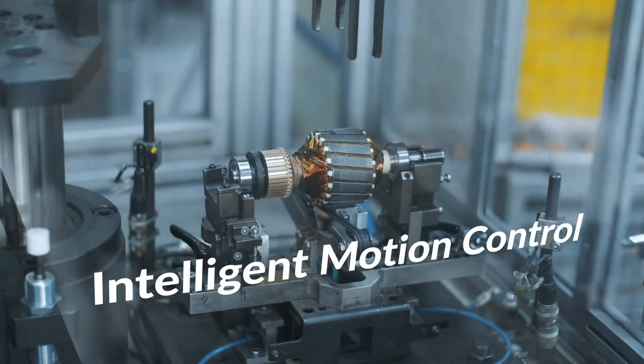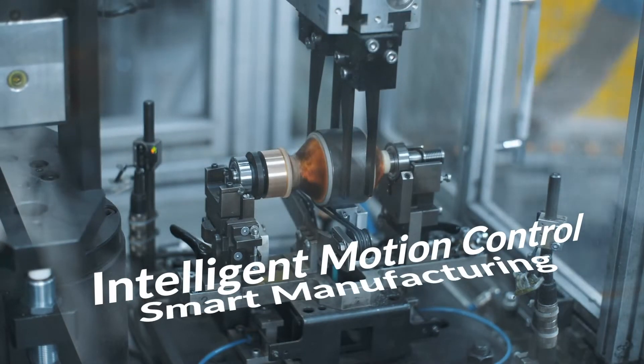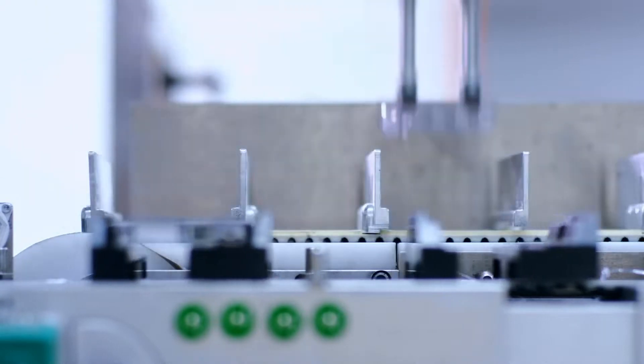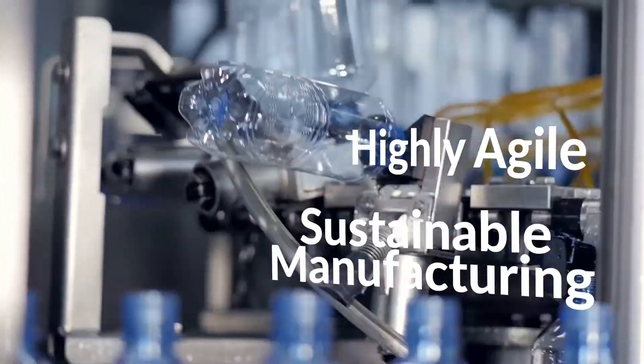Intelligent motion control is the core building block of smart manufacturing. From pumps to conveyor belts, from extruding press to robotics, intelligent motion control is at the heart of highly agile and sustainable manufacturing.